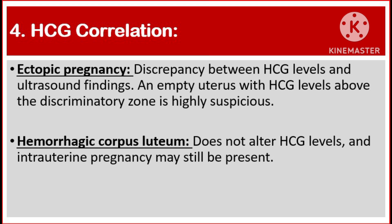Number four, human chorionic gonadotropin correlation. In ectopic pregnancies, there is a discrepancy between HCG levels and ultrasound findings. An empty uterus with HCG levels above the discriminatory zone is highly suspicious. But hemorrhagic corpus luteum doesn't alter HCG levels, and an intrauterine pregnancy may still be present.